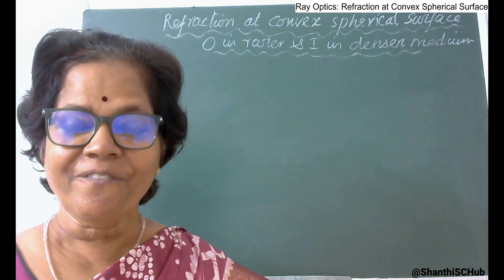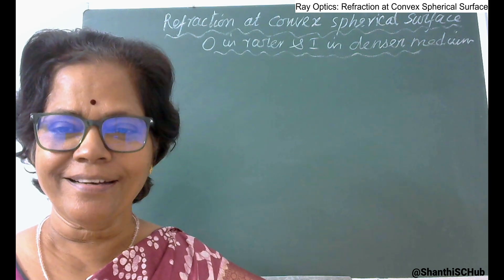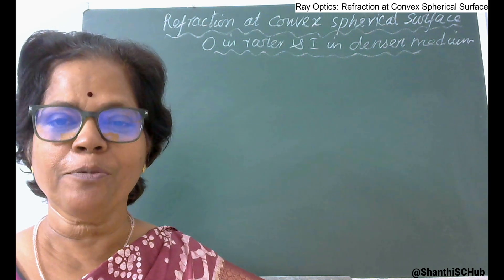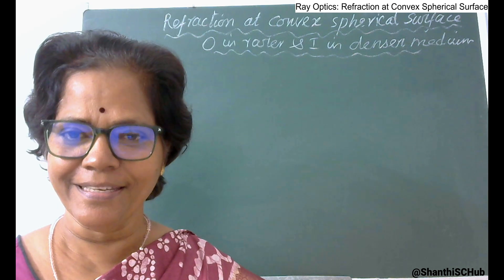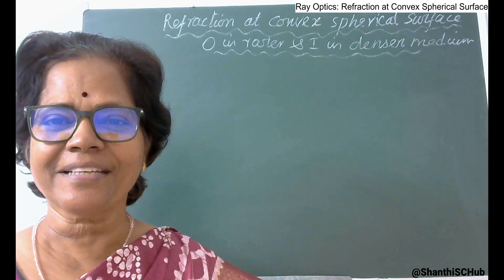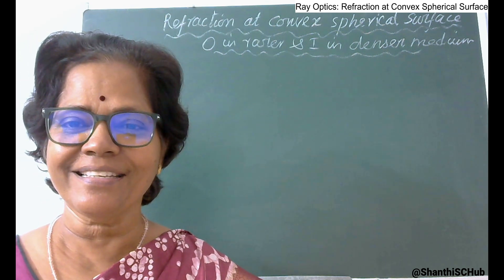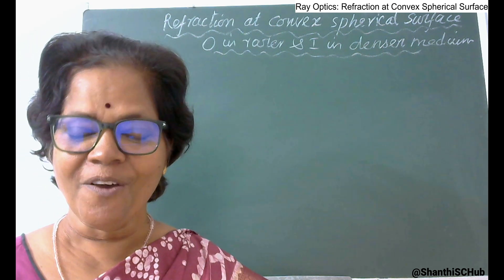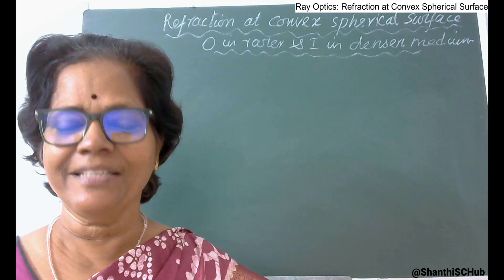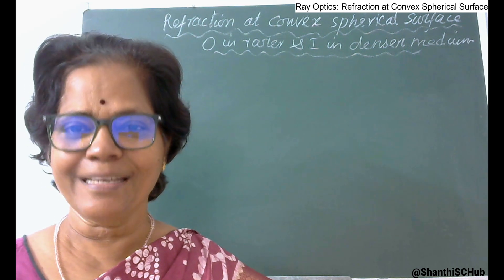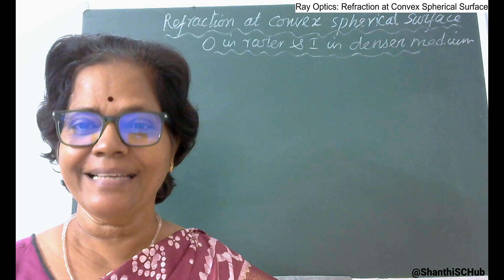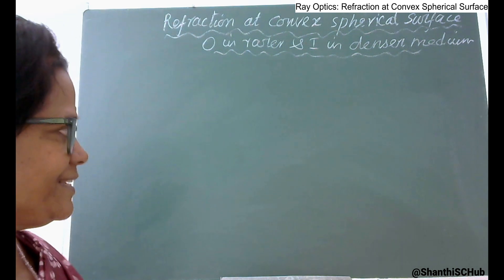Hello children, welcome. Today's topic from ray optics of class 12 standard physics is refraction at a convex spherical surface for an object in a rarer medium and image in a denser medium — that image is a real image.